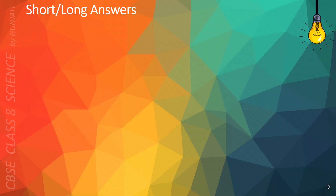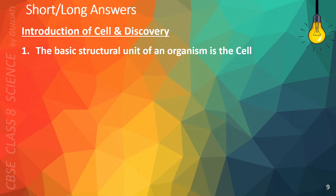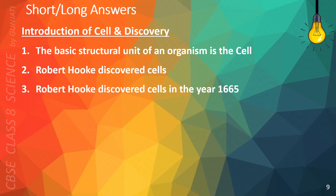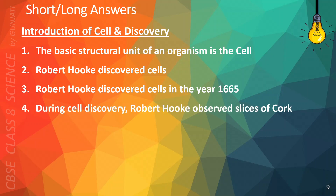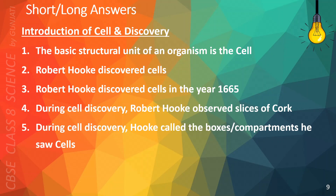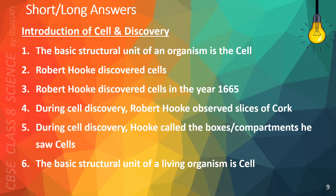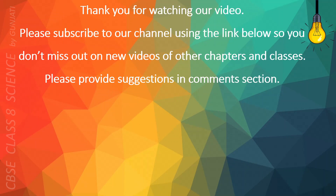The following points will help you answer questions on the introduction of cell and discovery. The basic structural unit of an organism is the cell. Robert Hooke discovered cells in the year 1665. During cell discovery, Robert Hooke observed slices of cork. Hooke called the boxes or compartments he saw cells. The egg of a hen is made up of 1 cell. Thank you!